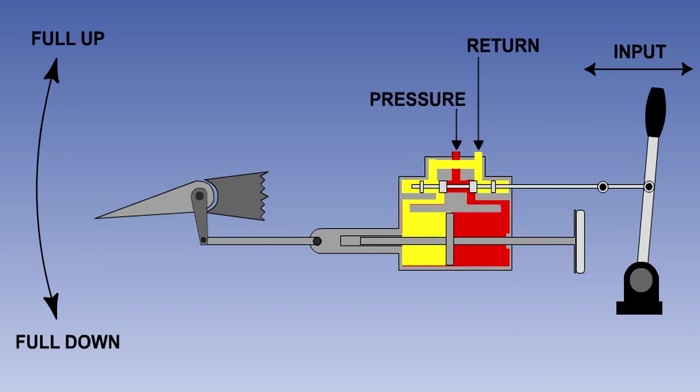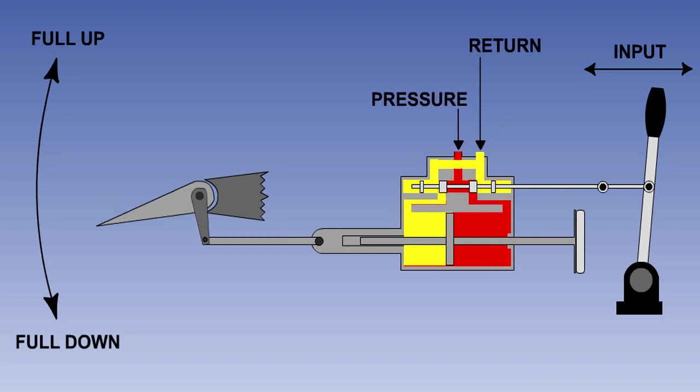Since the ram is fixed to the aircraft, hydraulic pressure will now move the actuator housing over to the right, thus lowering the elevator. As the actuator housing moves, it gradually repositions the control valve pistons until they cover the actuator ports again, thereby cutting off further hydraulic supply and blocking off the return port. This creates a hydraulic lock in the actuator and prevents further control surface movement.